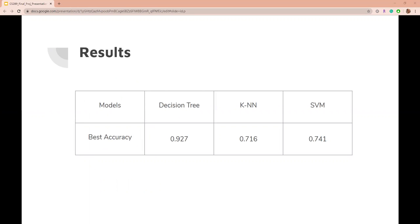Comparing different models, we get the best result from decision tree with accuracy 0.927.